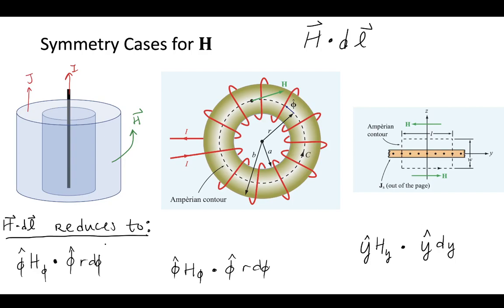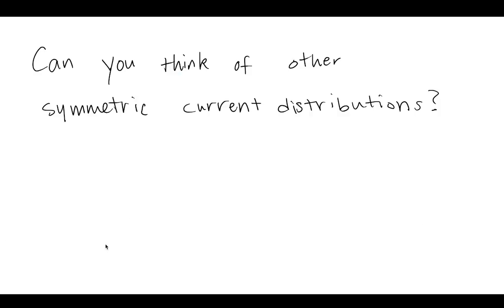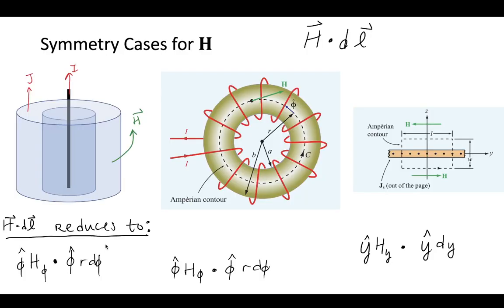So this forces you to use your intuition between the field H and the current I. Now can you think of any other symmetric current distributions? Most likely not. There's only a few of them, and those are basically the ones that I showed on this slide. So there's only a few cases of these.